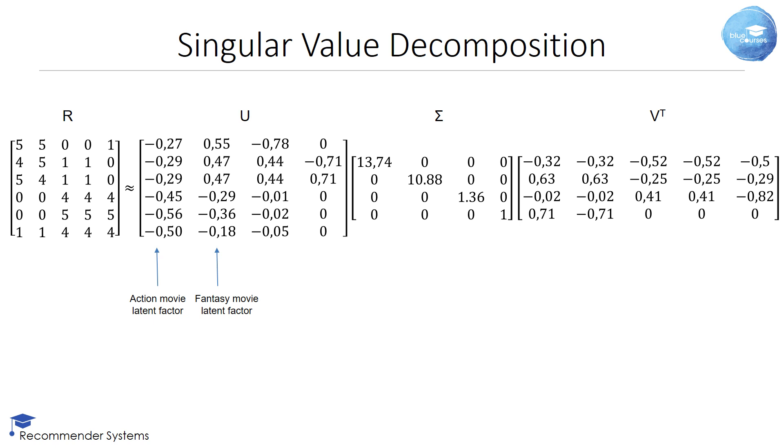Let's look at the second column of the U matrix again. Here, you see a discrepancy between the first three values and the final three values. This essentially models the fantasy movie latent factor concept as liked by Sophie, Victor, and Laura.